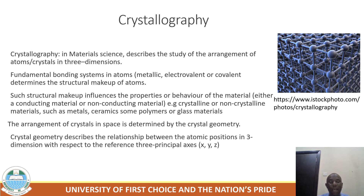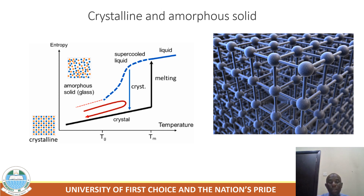This arrangement of crystals in space is determined by the crystal geometry, which ultimately influences the properties or behavior of the material, whether it is a conducting material or a non-conducting material. The crystal geometry describes the relationship between the atomic position in three dimensions with respect to the reference three principal axes x, y, z, and this takes us to determining when a material is crystalline or amorphous.